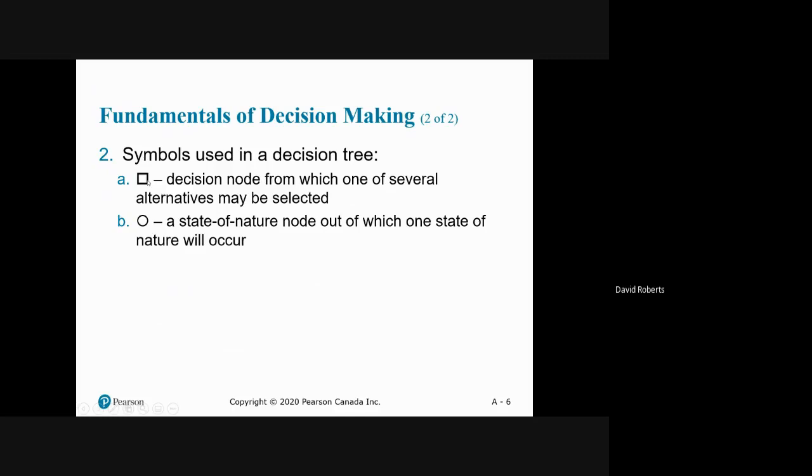The square or box is where it's an alternative, and the circle is a state of nature. The states of nature will have probabilities, the alternatives will not. So the box will not have a probability—it'll be choose large, medium, or small.